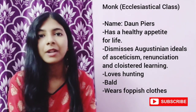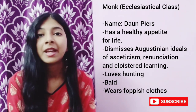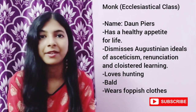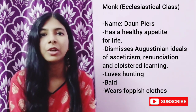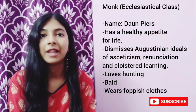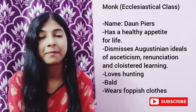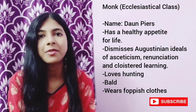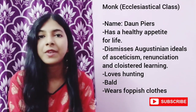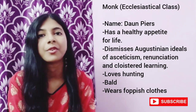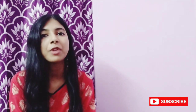Next we have the Monk, who also belongs to the ecclesiastical class. His name is Daun Pious. He identifies himself with the new world of wealth, luxury and pleasure. He loves hunting and is against the Augustinian ideals of asceticism, renunciation and cloistered learning. He is bald and wears foppish clothes.